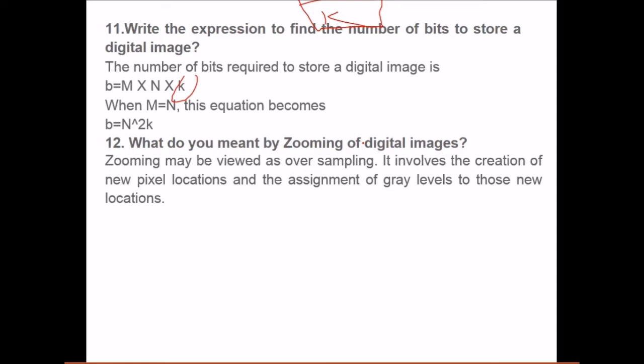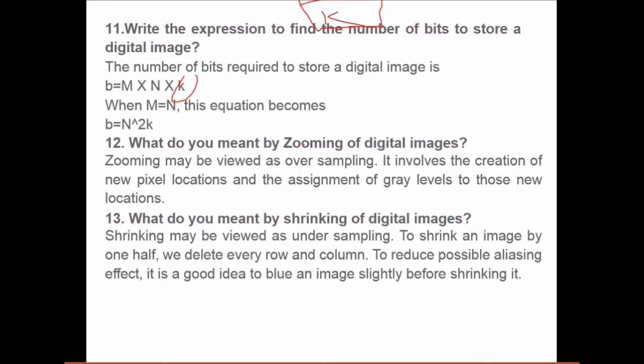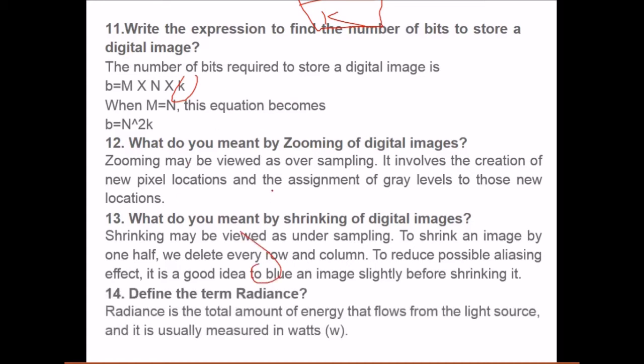What do you mean by zooming of digital images? Zooming may be perceived as oversampling. It involves the creation of new pixels and assignment of gray levels to those locations. What do you mean by shrinking of digital images? To shrink an image by one half we delete every row and column. To reduce possible aliasing effect, it is good idea to blur the image slightly before shrinking it.